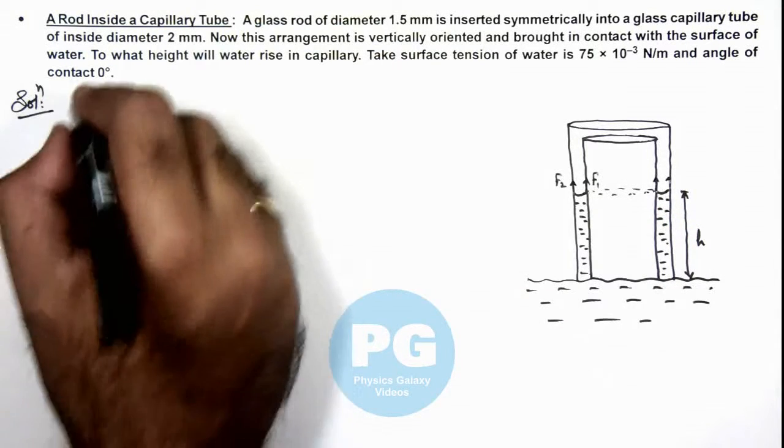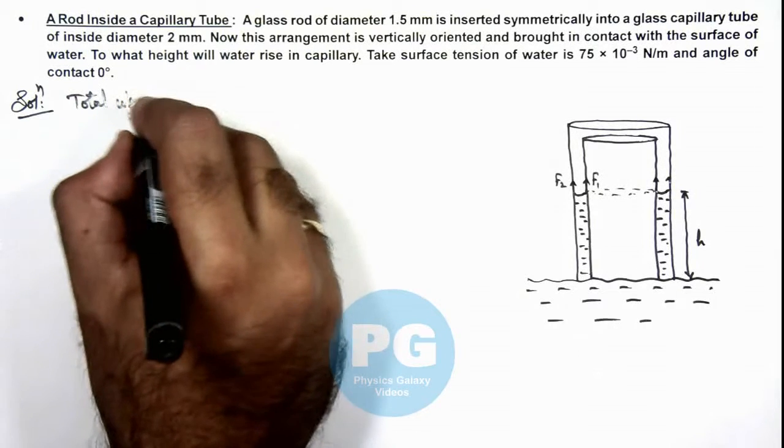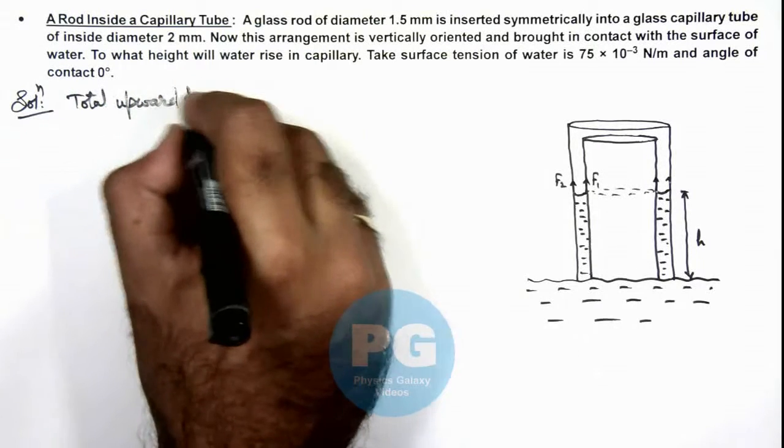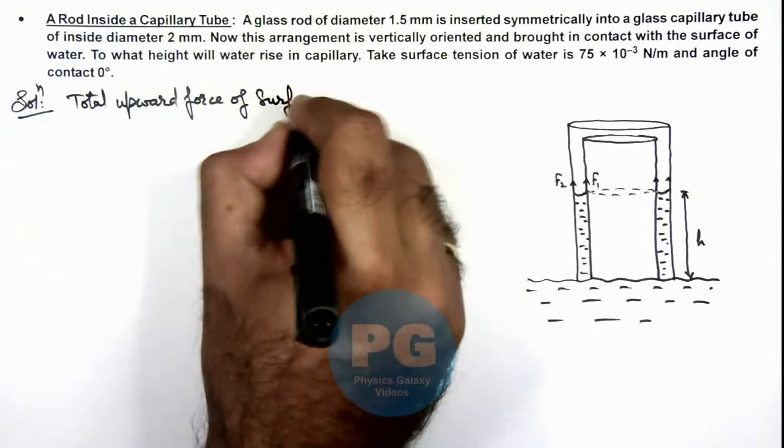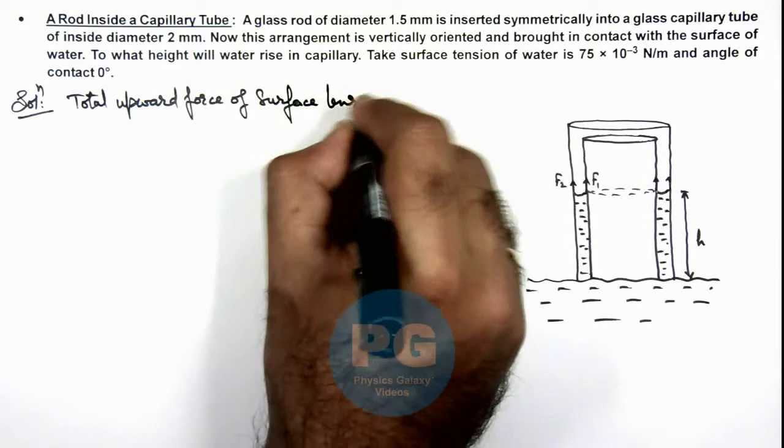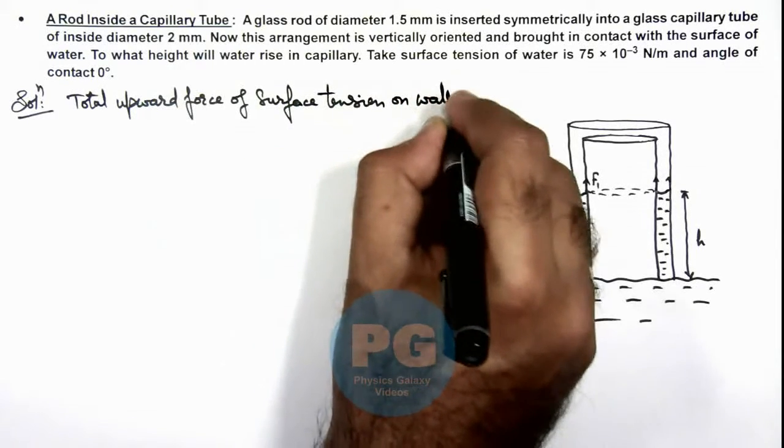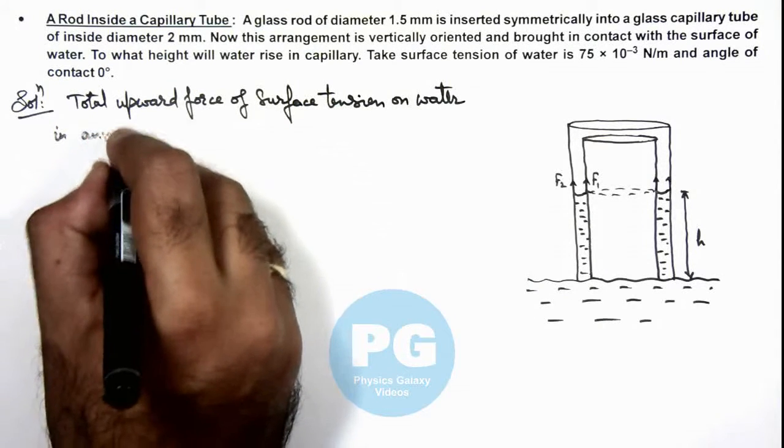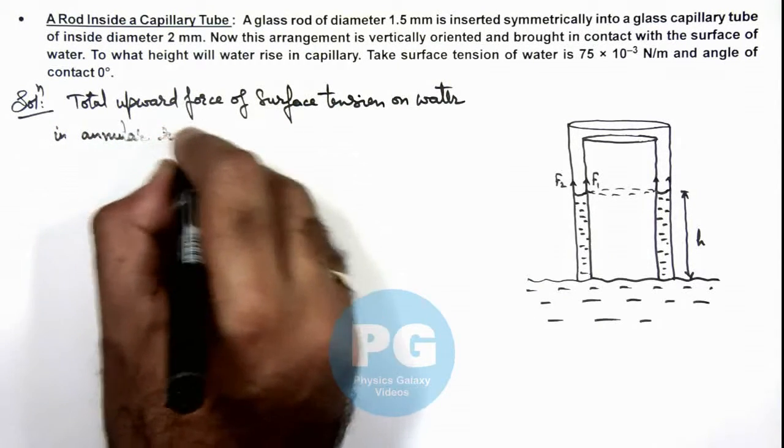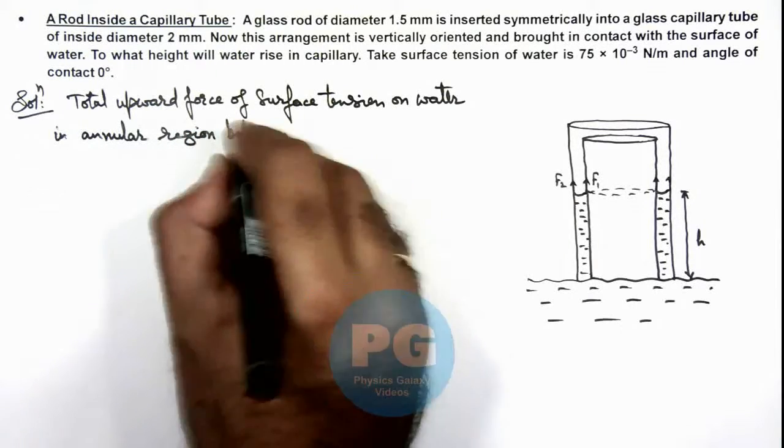So we can first calculate the total upward force of surface tension on water in annular region between rod and capillary.